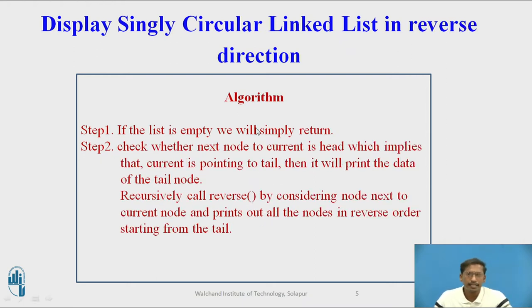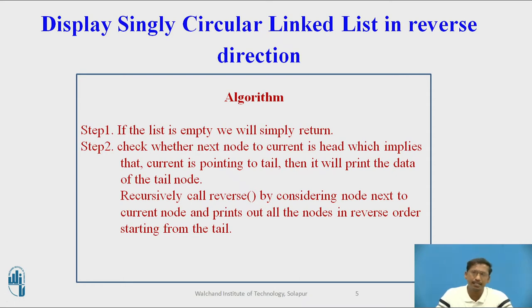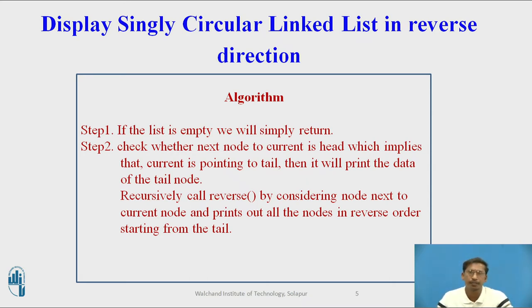So this is the algorithm for displaying a singly circular linked list in forward direction. The second algorithm is for displaying a singly circular linked list in reverse direction. There are multiple approaches to print the singly circular linked list in reverse direction — you can use recursion, or you can print it in reverse direction without using recursion also. This is the algorithm for printing a singly circular linked list in reverse direction.